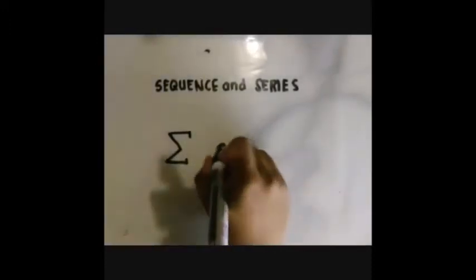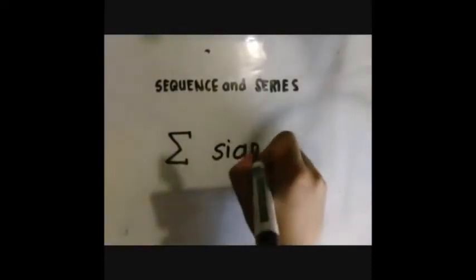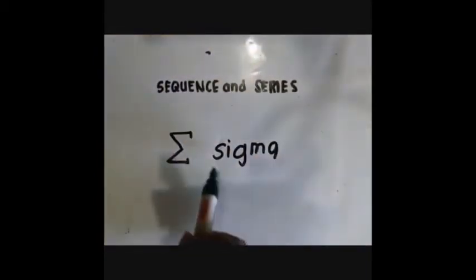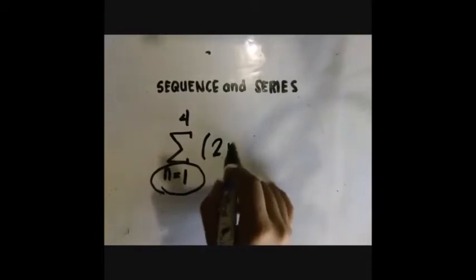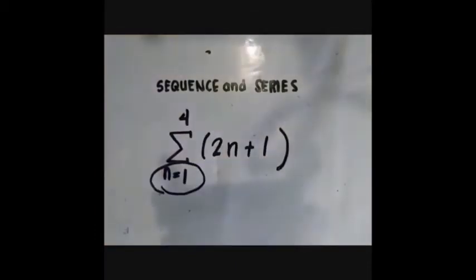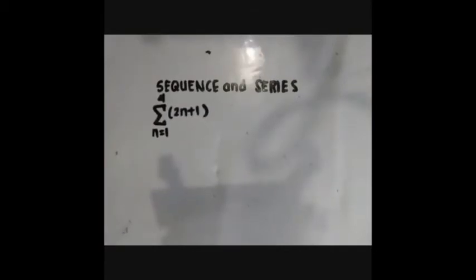This symbol represents a series. It is called a sigma. I write here N equals 4. N equals 1 is the lower boundary of the series. 4 indicates when it ends. For example, I write here 2N.